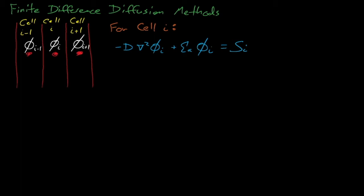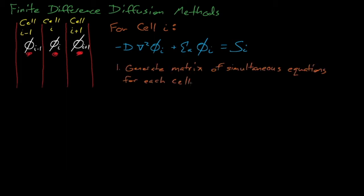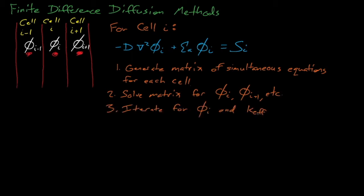The general procedure for finite difference methods is to first generate a matrix that contains the simultaneous equations for the diffusion equation in each finite element. Next, we solve this system of simultaneous equations to determine the flux distribution across the cells, and then lastly, we iterate on this process if we are to estimate the system's eigenvalue. Don't worry if it's confusing right now — we will review this procedure in much more detail in just a few minutes.